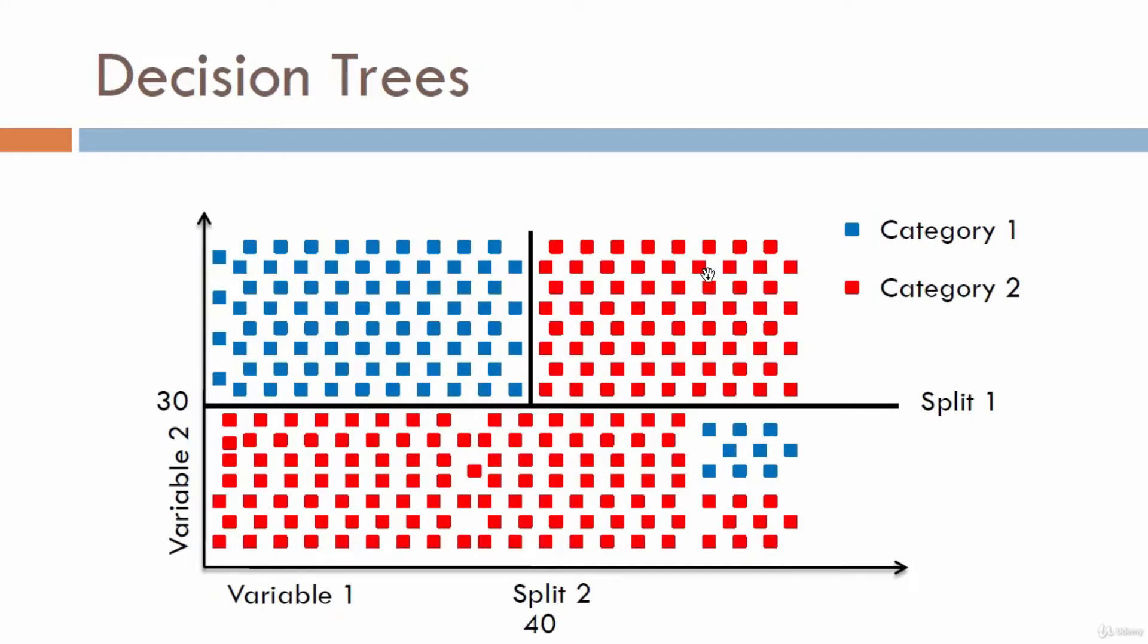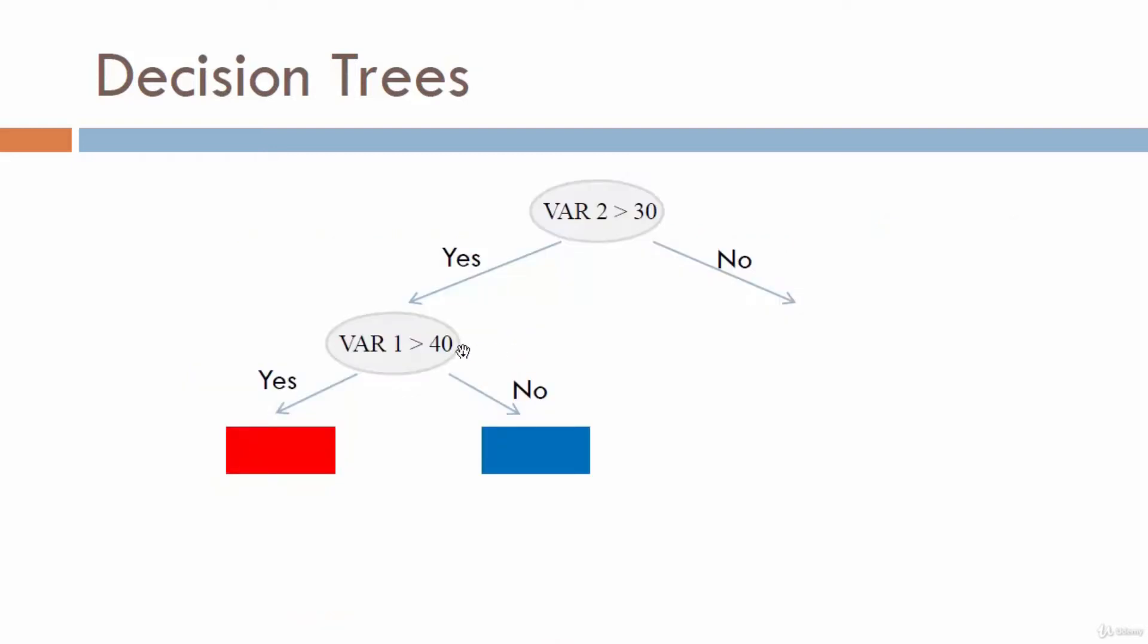Now let us consider split number two. Split number two is going to split only the data that is above split one, which is basically variable 2 greater than that particular value. You can add one more question based on this split, and that is whether variable 1 is greater than this value or not. Please note that we are adding it into this branch since the split here is for only the data that is above this value.